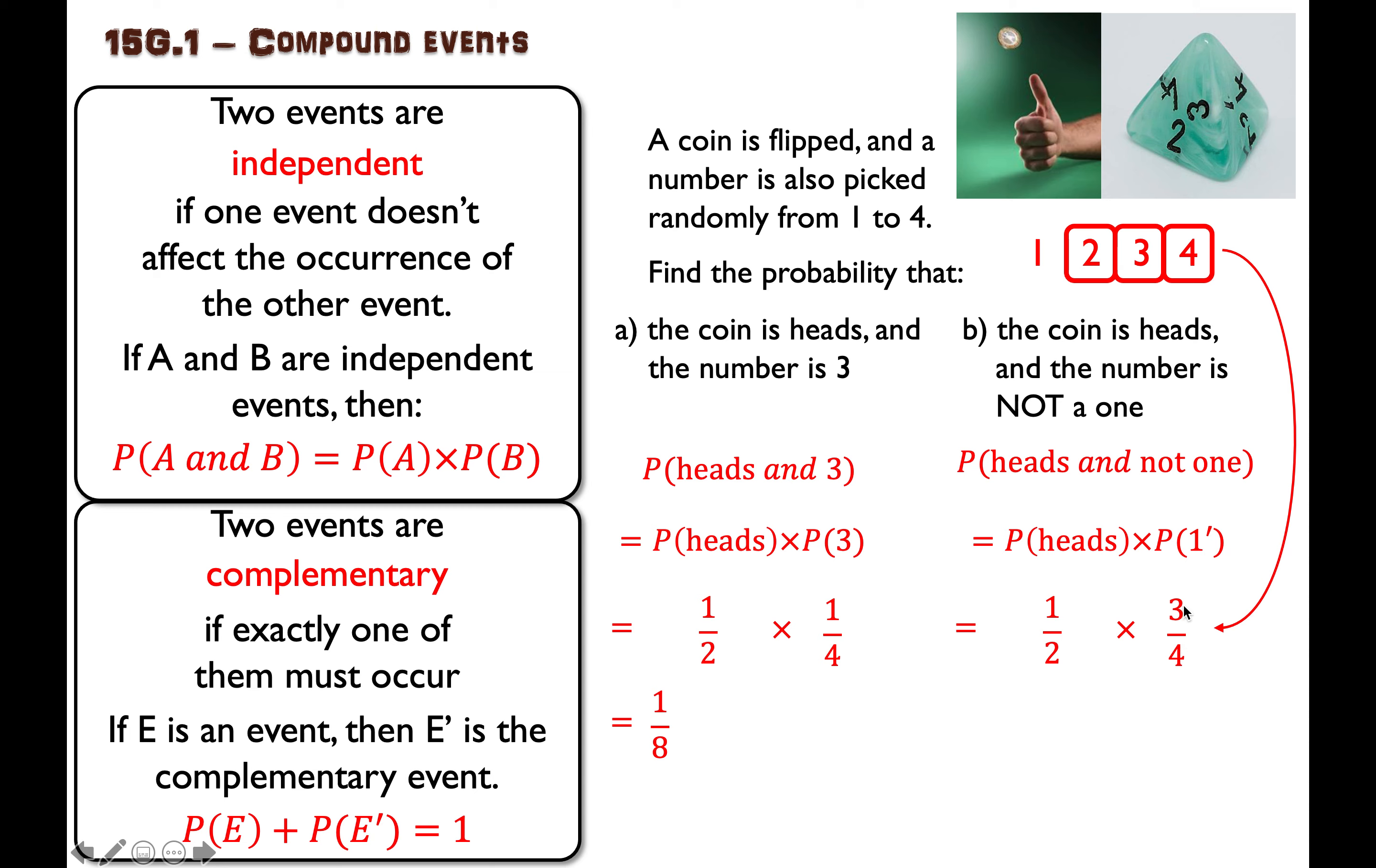Another way of figuring this out is that the chance of rolling a one on this die is one out of four. And if you do one minus one out of four, you get three out of four.